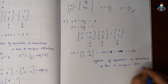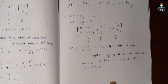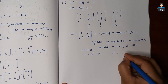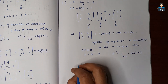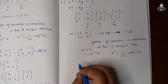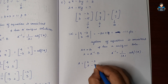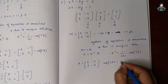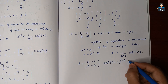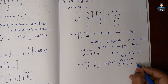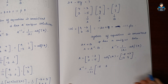Since X equals A inverse into B, we find A inverse using 1 over determinant of A into adjoint of A. Matrix A is [4, -3; 3, -5]. Adjoint of A: interchange diagonal values to get minus 5 and 4, and sign change off-diagonal to get plus 3 and minus 3. So adjoint of A is [-5, 3; 3 ,4]. A inverse equals 1 over minus 11 into [-5, 3; -3, 4].